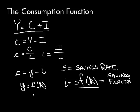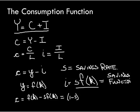We can rewrite our consumption function as: little c equals f of little k minus s times f of little k, which simplifies to (1 minus s) times f of little k. Here s is the marginal propensity to save, and 1 minus s is the marginal propensity to consume. So we consume the MPC times the amount we produce, and we save the MPS times the amount we produce.